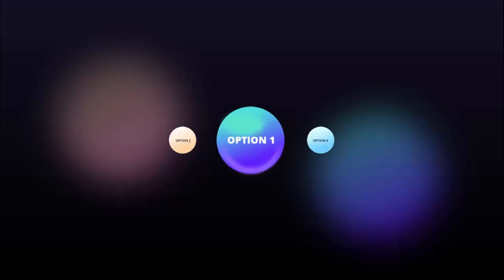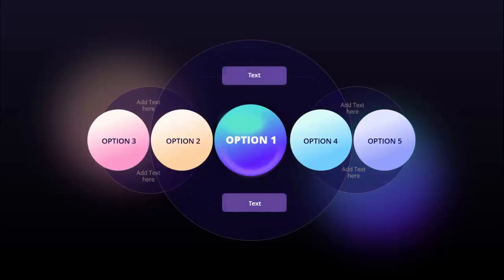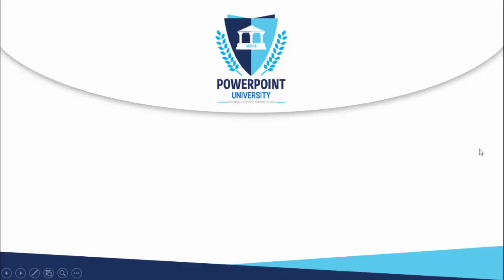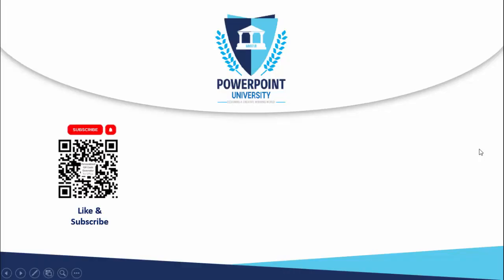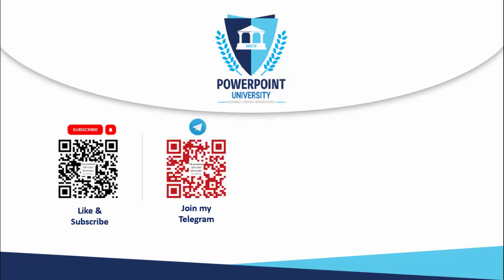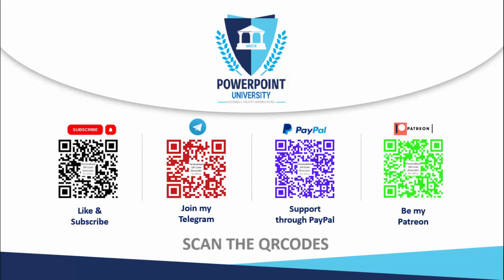In today's tutorial I'm going to show you how to create a five-circle option infographic slide in PowerPoint. When you click, it shows option one, two, three, four, and five, and you can add text and detailed text for each option. If you haven't subscribed to my channel PowerPoint University, please subscribe and enable the notification icon. You can join my Telegram group via the link, and support my channel through PayPal or Patreon.